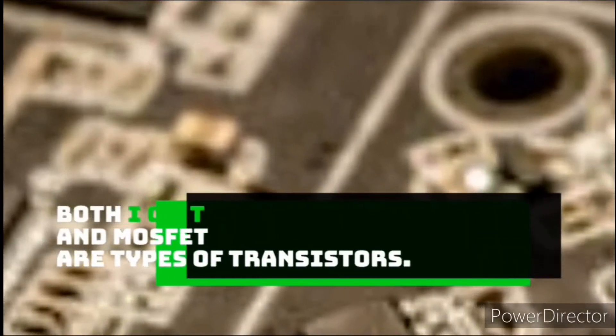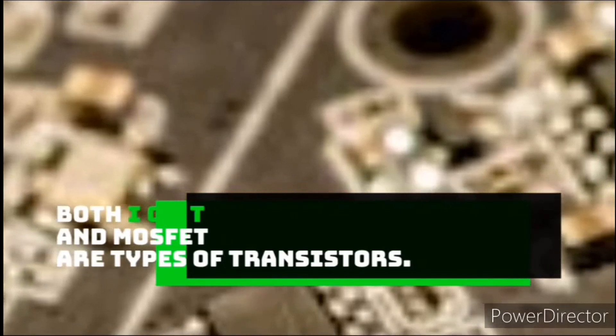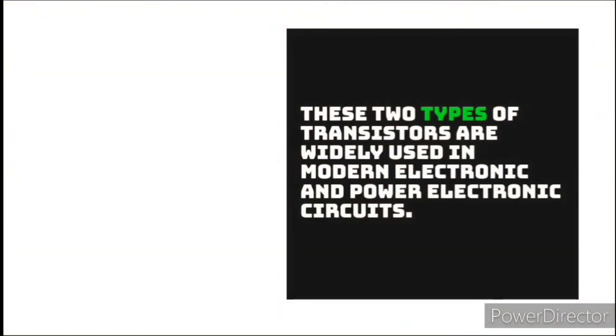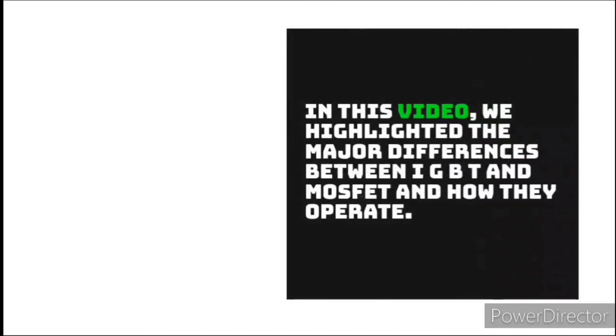Conclusion. Both IGBT and MOSFET are types of transistors. These two types of transistors are widely used in modern electronic and power electronic circuits. In this video, we highlighted the major differences between IGBT and MOSFET and how they operate.